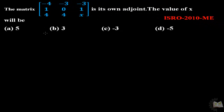This is an interesting question about a matrix. The 3x3 matrix is its own adjoint. We have to calculate the value of x. So how do we calculate the value of x when the matrix is its own adjoint?